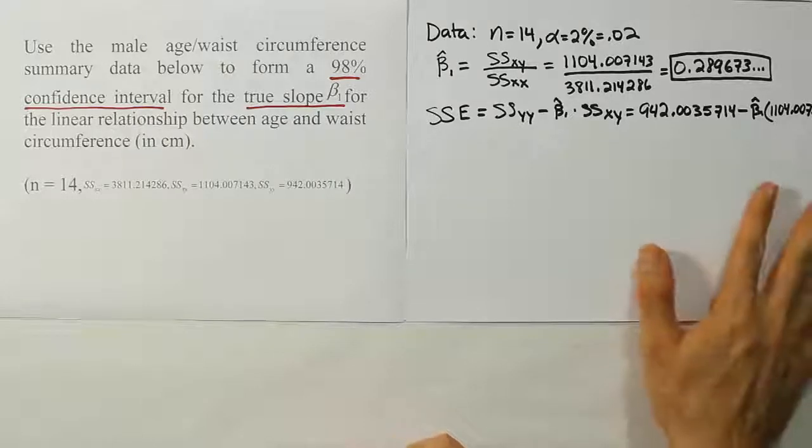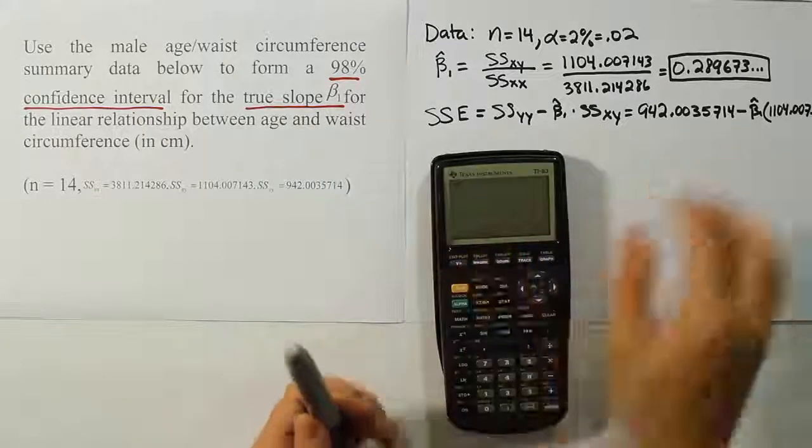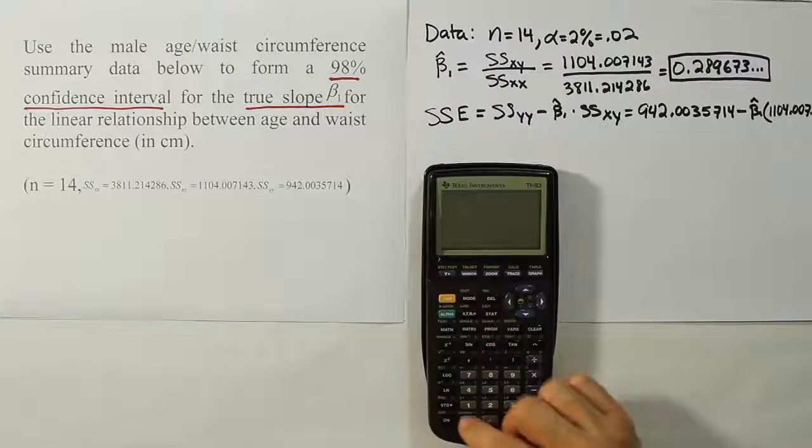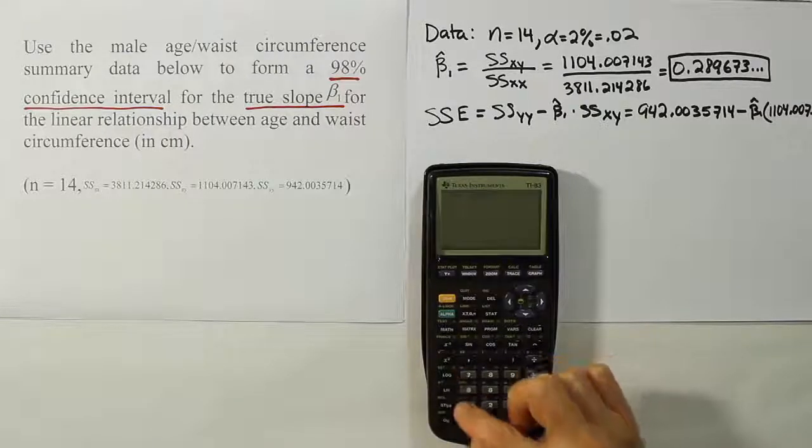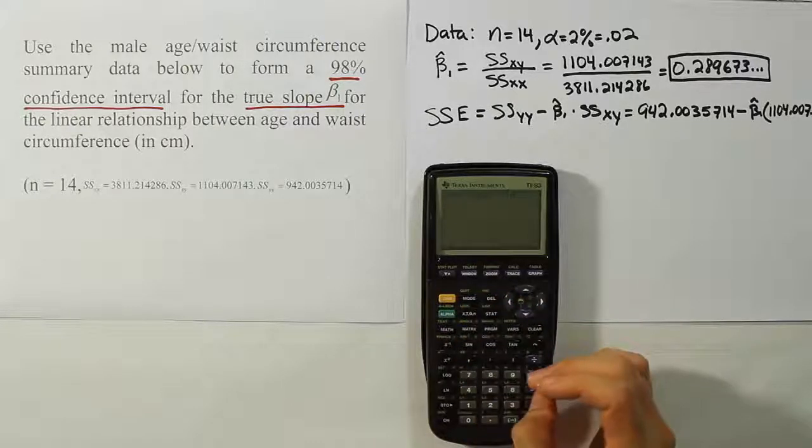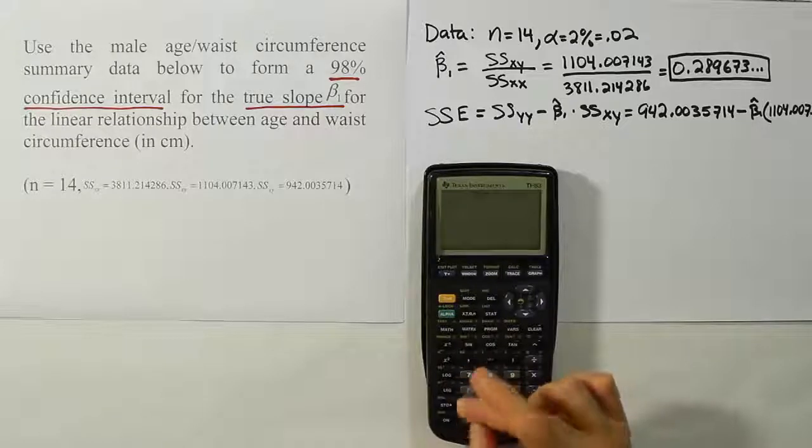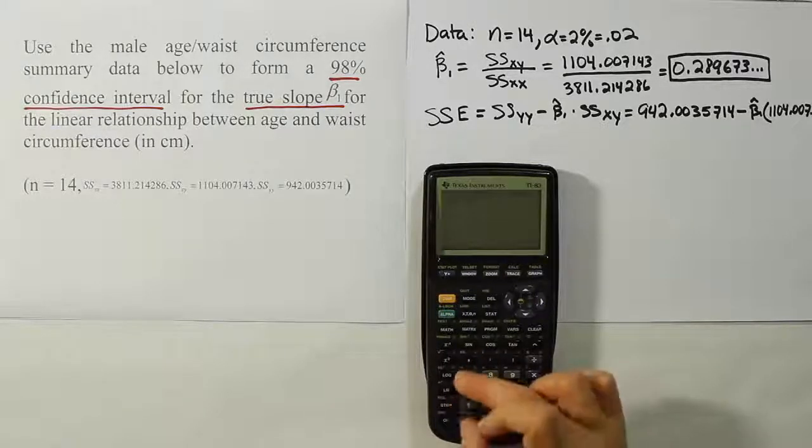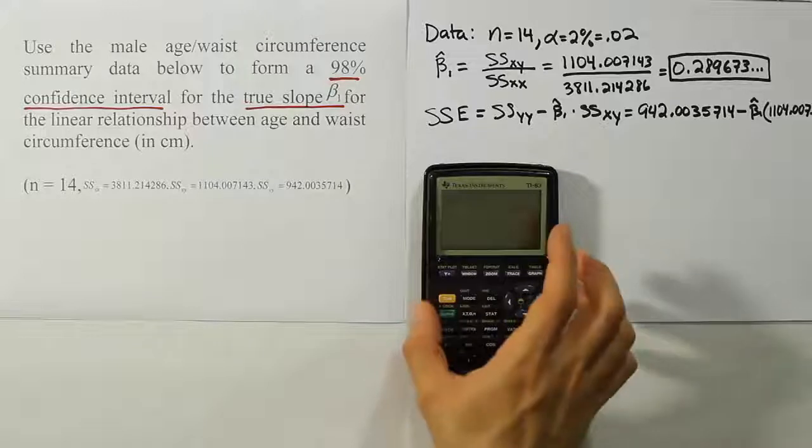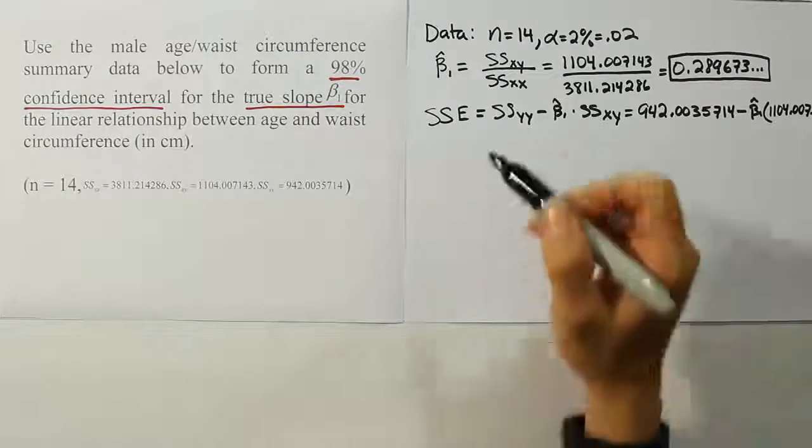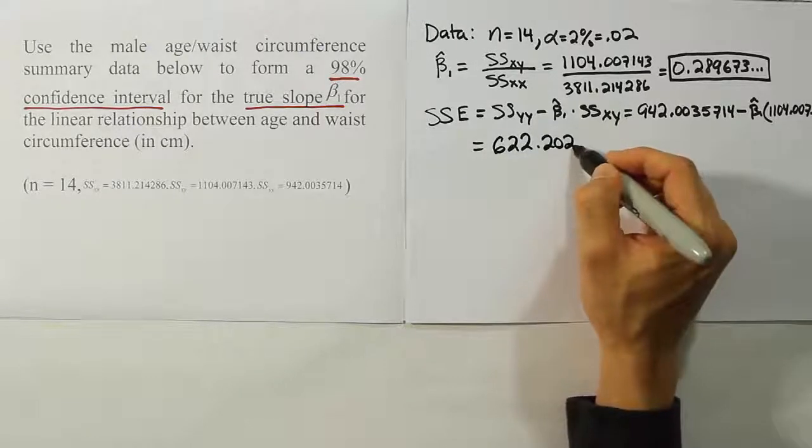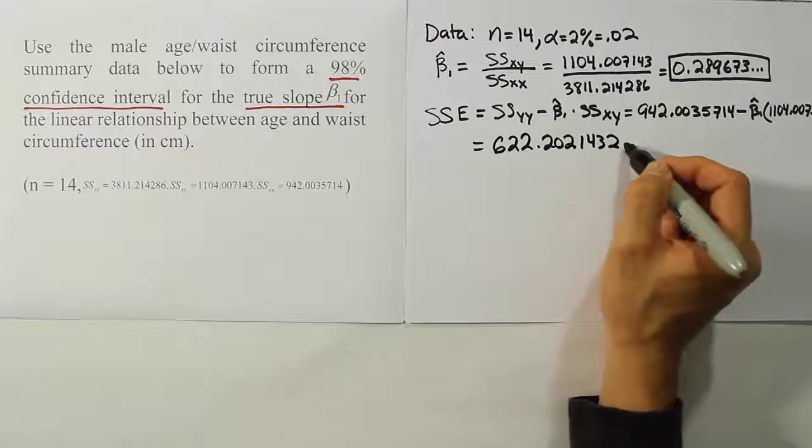Let's take that value then and plug in our numbers into the calculator and come up with the SSE. So we have 942.0035714 minus the slope estimator B, or beta1 hat, times 1104.007143. That's the entire set of values plugged in, and we get the sum of squares for error to be 622.202, so 622.2021432.